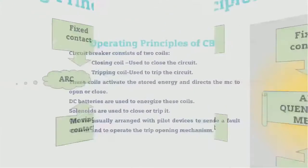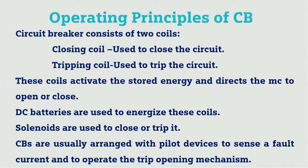When the fixed and moving contacts break, the arc is quenched by the medium — that is the operating principle of the circuit breaker. There are two coils used: a closing coil for closing the circuit and a tripping coil for tripping the circuit. These coils activate the stored energy and direct the moving contact to open or close. DC batteries are used to energize these coils.